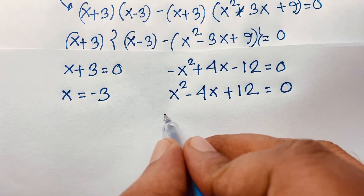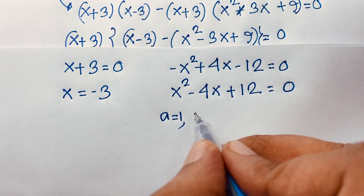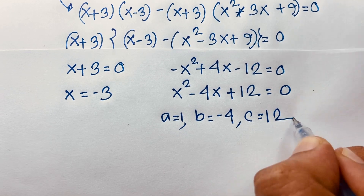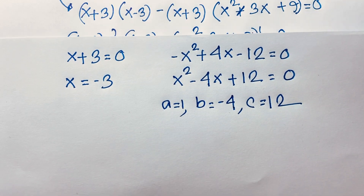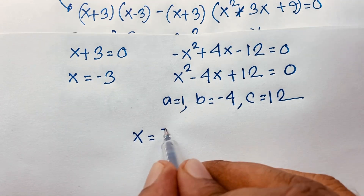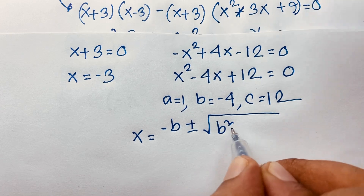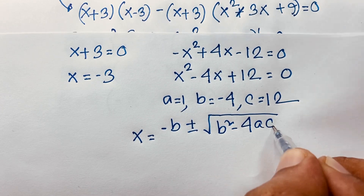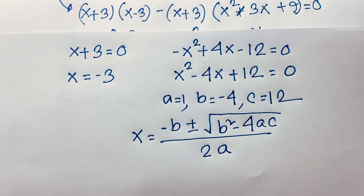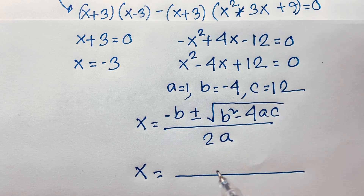For the quadratic x² − 4x + 12 = 0, we have a = 1, b = −4, and c = 12. Using the quadratic formula: x equals minus b plus or minus square root of (b² minus 4ac), all over 2a.